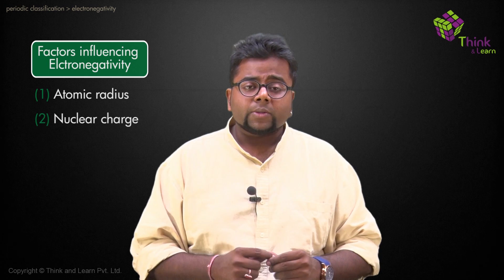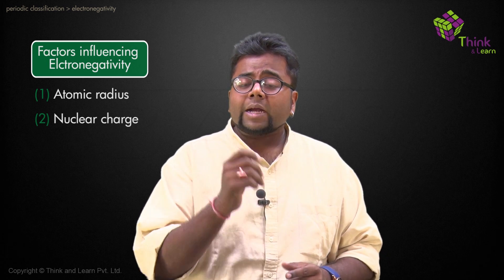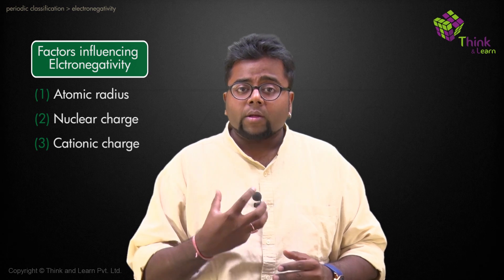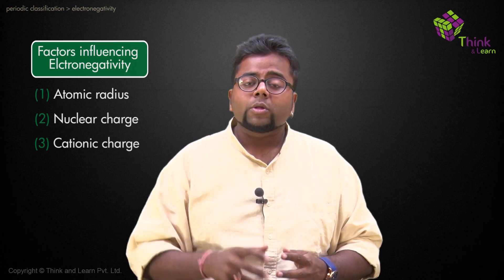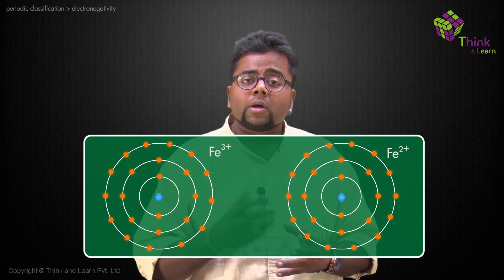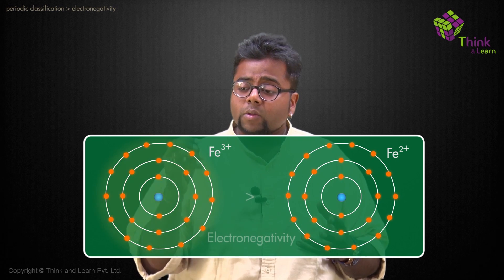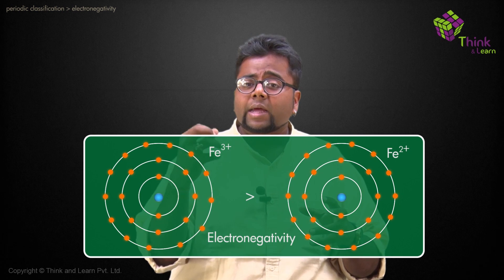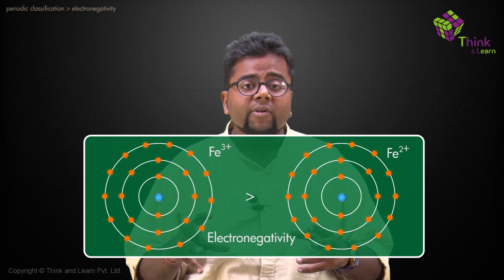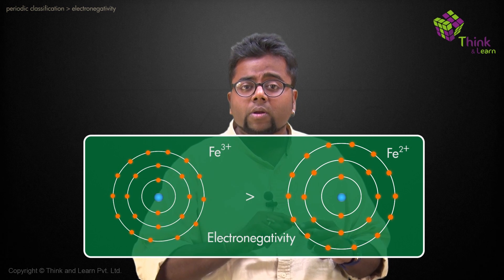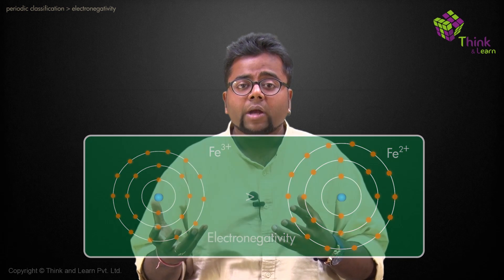Electronegativity depends on atomic radius and nuclear charge. One more factor is the cationic charge — a higher cationic charge means the atom is short of electrons and wants to pull electrons towards itself to lower its positive charge. For example, between Fe³⁺ and Fe²⁺, Fe³⁺ has higher electronegativity because its higher cationic charge leads to a smaller ionic size, and smaller size means higher electronegativity.